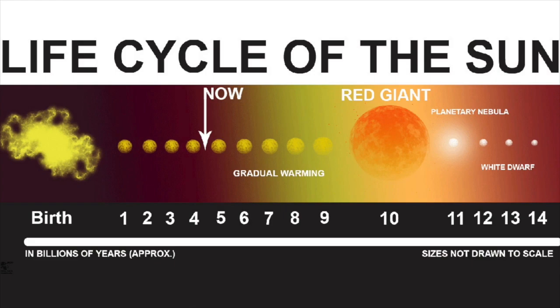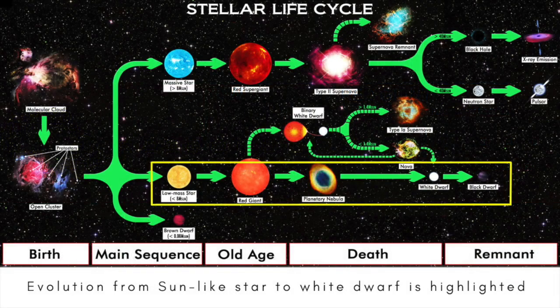When all the helium in the core is used up, the sun's bloated atmosphere will be lost into space as a glowing shell of gas called a planetary nebula.